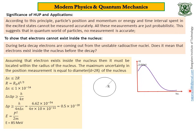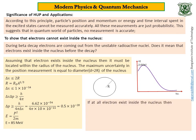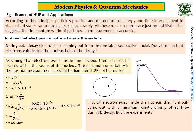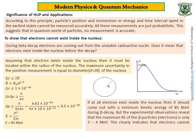Now let us see the experimental observation. This is a graph of kinetic energy versus number of beta particles emitted. Look at the graph: the maximum kinetic energy attained by the beta particles is only 3 to 4 MeV, and even that is reached by very few beta particles — most possess much less energy. Not even a single beta particle comes out with 85 MeV. The explanation: if the electron existed inside the nucleus, it should come out with a minimum kinetic energy of 85 MeV during beta decay. But experiments show the maximum is only about 3 to 4 MeV. This clearly shows there is no electron inside the nucleus at all.